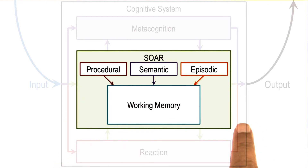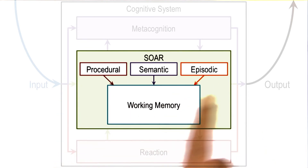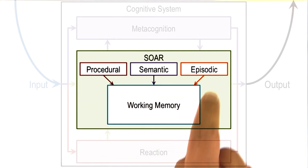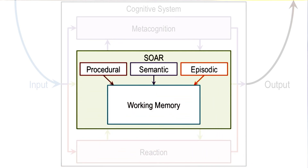Notice that this makes an architecture — there are different components that are interacting with each other. This arrangement of components will afford certain processes of reasoning and learning, and that's exactly the kind of processes we'll look at next.